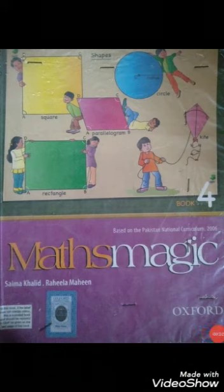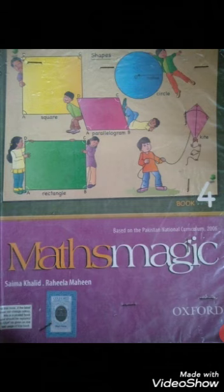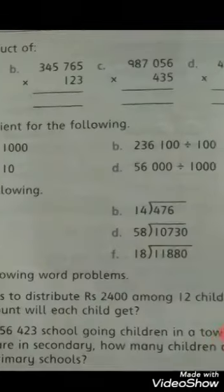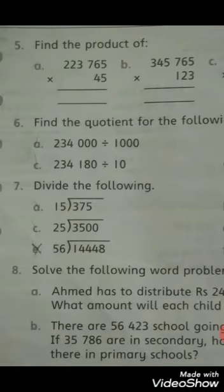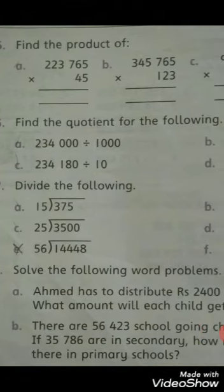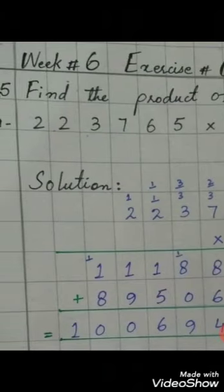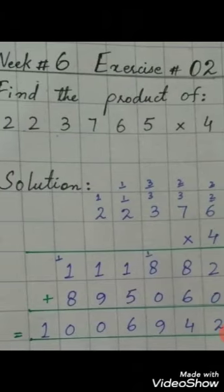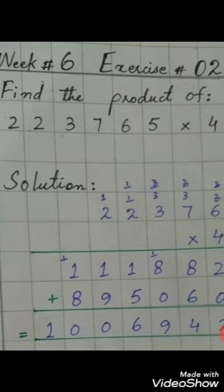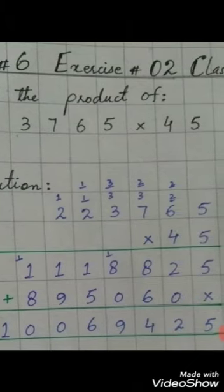Assalamualaikum dear students, I hope you all are fine and having a good time in week number six of our online classes. We are starting our work with question number five of exercise number two. Write question number five and copy. Find the product of two numbers: 223,765 multiply by 45.